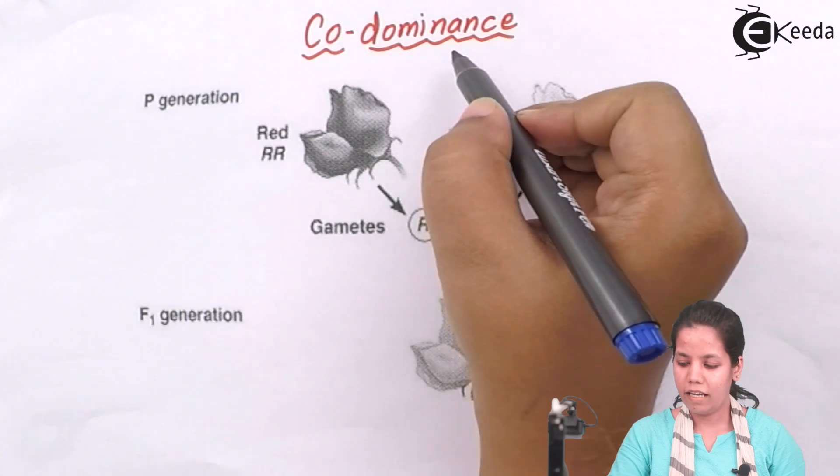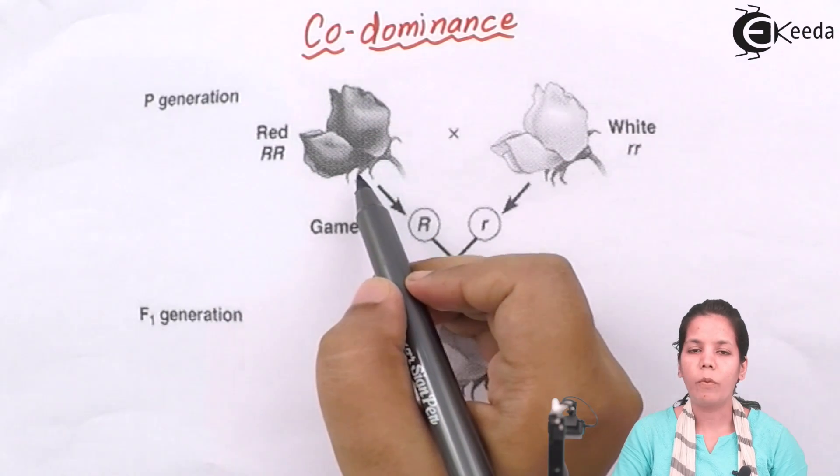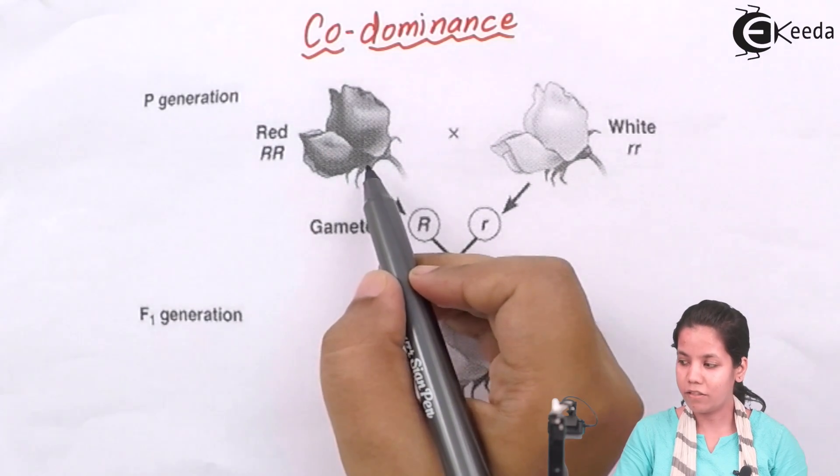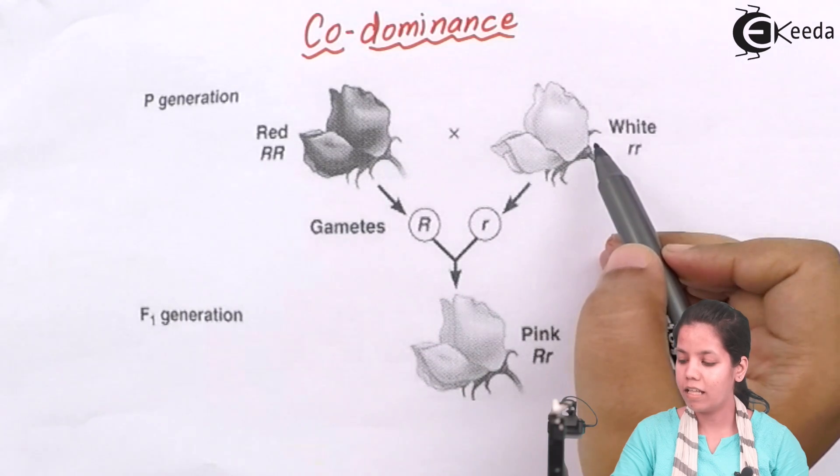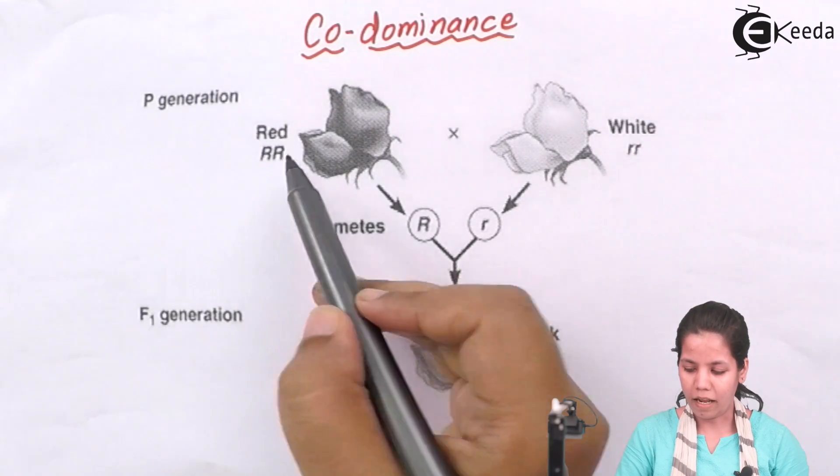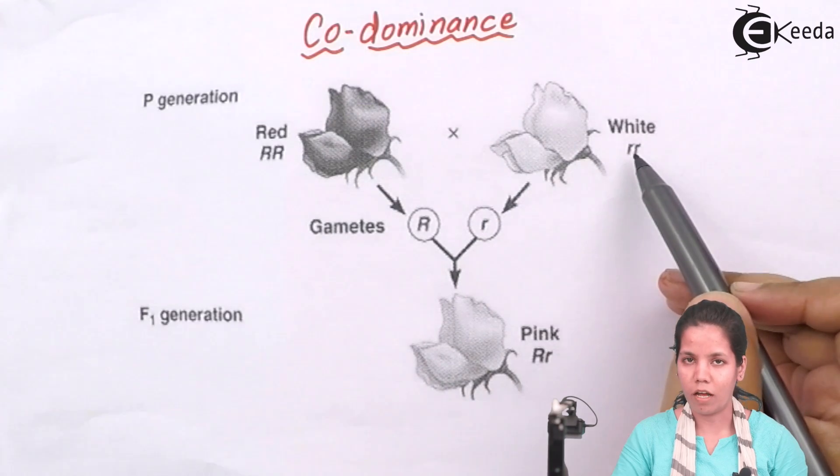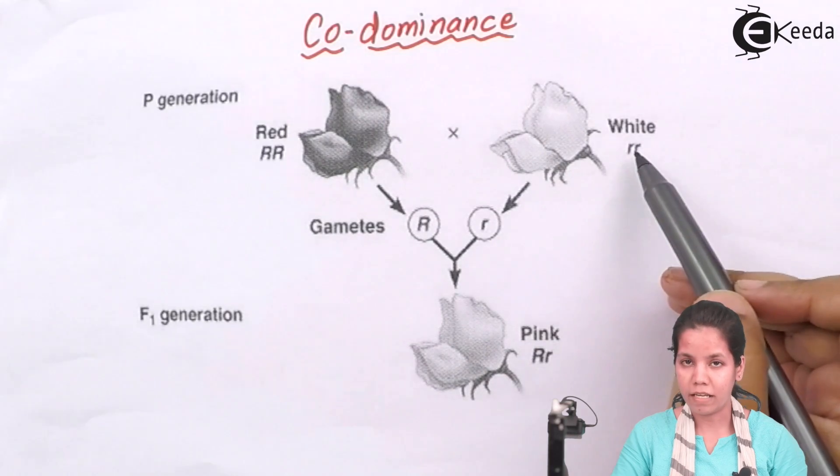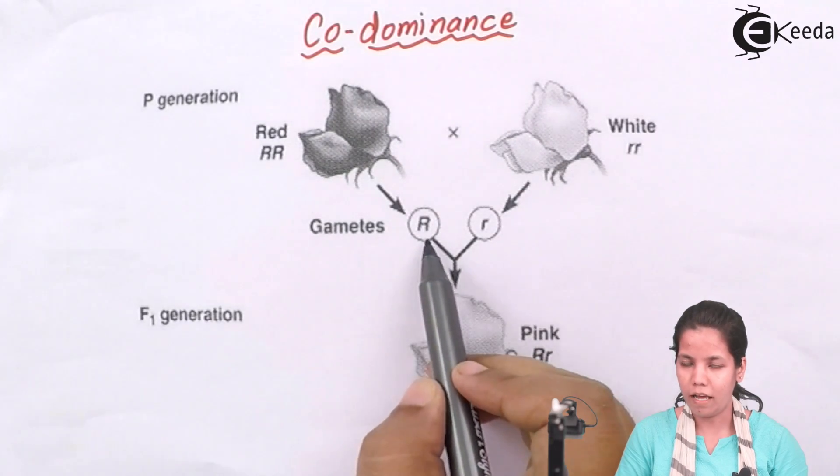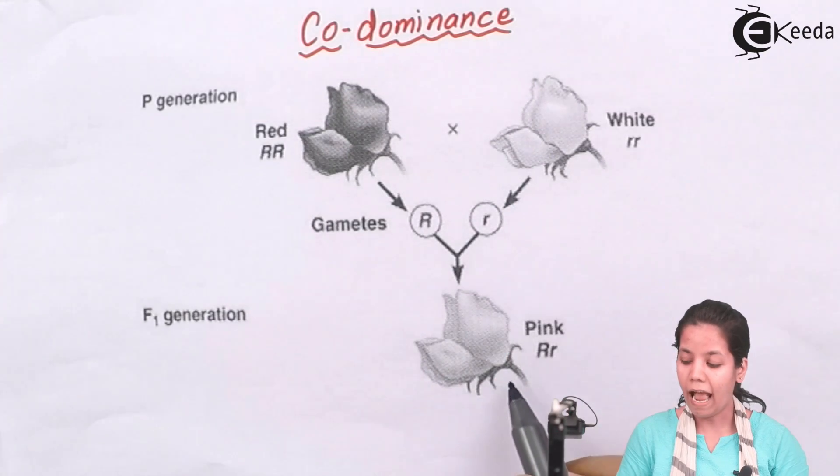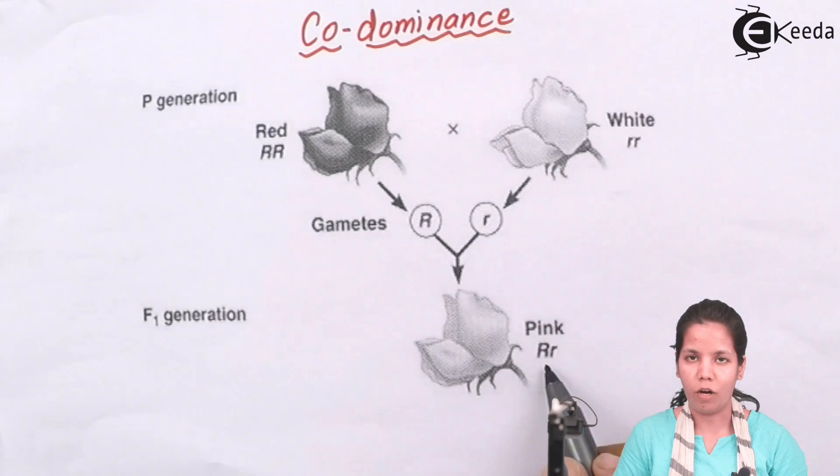Codominance can be seen in rose plant. We have two different sets of rose plants, one is the red rose variety and another is the white rose variety. When we talk about codominance in both varieties of roses, when the R of the red rose fuses with the R of the white rose, gametes get mixed randomly and we get gametes which are R and R. Finally you get a rose variety which is pink in color and has gametes which are R and small R.